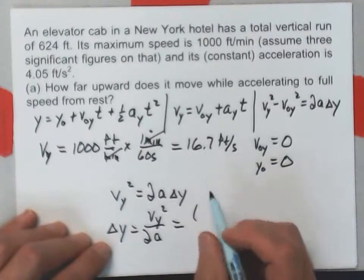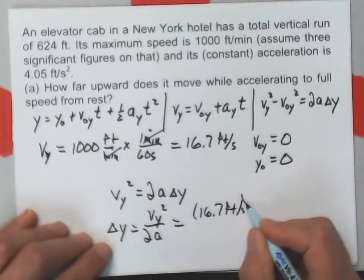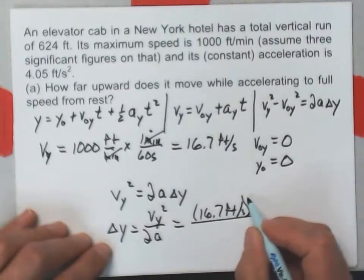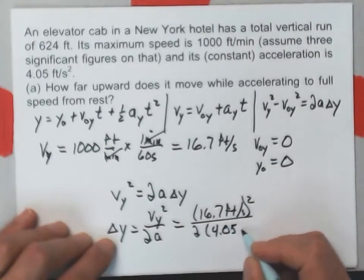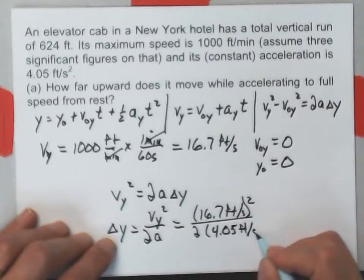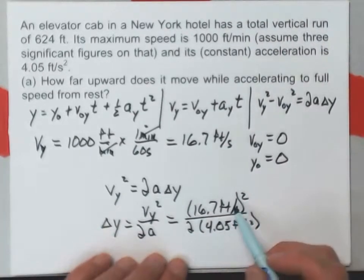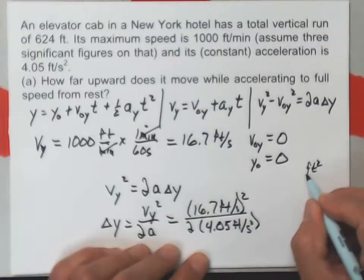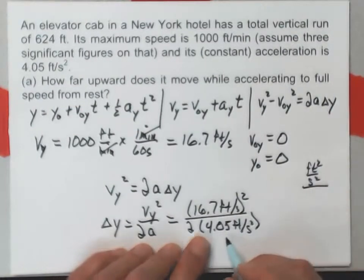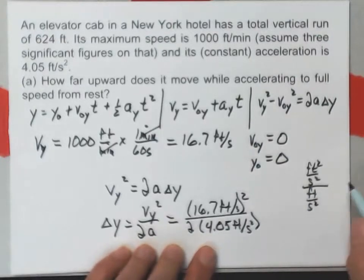And my v sub y is that 16.7 feet per second squared, divided by 2 times that 4.05 feet per second squared. Unit wise, I've got feet squared per second squared on top. On the bottom, I've got feet per second squared.